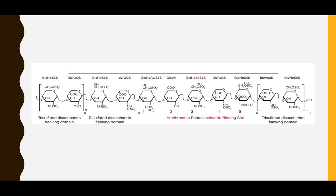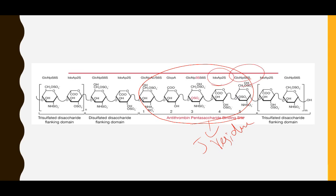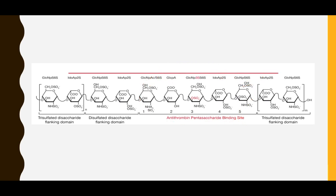In heparin, there are some unique sequences. This unique sequence is known as the antithrombin pentasaccharide binding site. Pentasaccharide means five residues — five sugar residues. These include N-acetyl glucosamine, iduronic acid, and glucuronic acid. The number of sulfations is different in different residues. You should know that heparin contains a unique five-residue structure which binds to antithrombin.